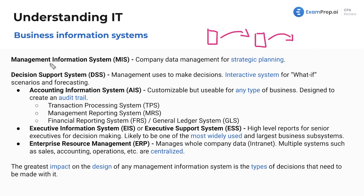Some of you might be familiar with it, some of you might not be. They provide different systems, right? Decision support systems — what are these systems? Well, these are systems that management use to make decisions. They're interactive systems for what-if scenarios and forecasting. With management information systems, it's really just any system that they use for strategic planning management. And under that, we've got decision support systems.